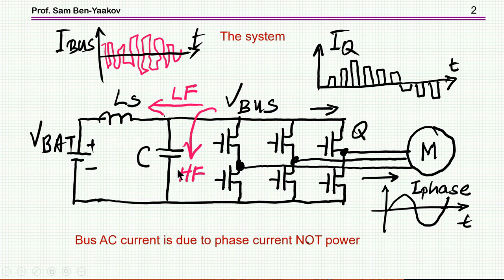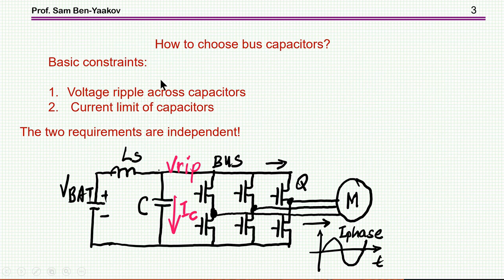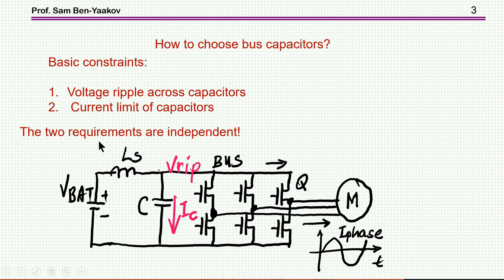The question I'm posing is: how to choose this capacitor? The considerations are, first, we want a certain ripple — we don't want the ripple voltage to exceed a certain value. Another consideration, which turns out to be extremely severe, is the current limit that one capacitor can carry. A higher current will generate heat and damage the capacitor, so manufacturers specify a maximum AC or ripple current per capacitor. These two requirements are independent and must be considered separately.